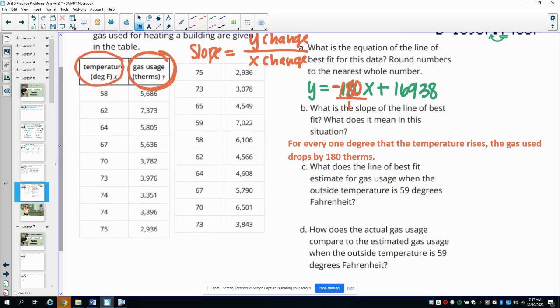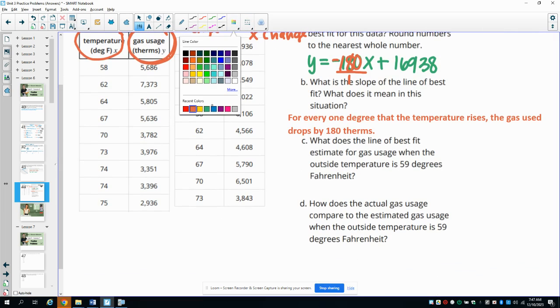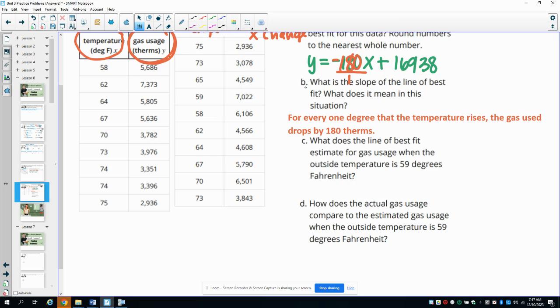Part C, what does the line of best fit estimate the gas usage will be for 59 degrees? So this is using our line of best fit. We're going to plug it in. So we're going to do y equals negative 180 times 59 plus 16,938. So you'll use your calculator to calculate that, and you'll end up with an estimate of 6,318. So for 59, it is estimating that we'll use 6,318 therms of energy.